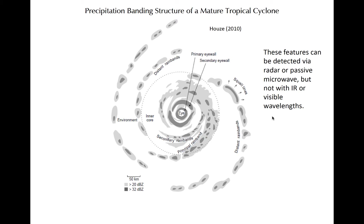Well-organized developing and mature tropical cyclones usually have a banded structure. In the center of mature TCs is the eye, where subsiding air prevents formation of deep convection. The eye is surrounded by an intense ring, or partial ring, of convection known as the eye wall. Sometimes two eye walls are present. In such cases, the outer eye wall is known as the secondary eye wall, and between the two eye walls is the moat region — a region of local subsidence where deep convection does not form.